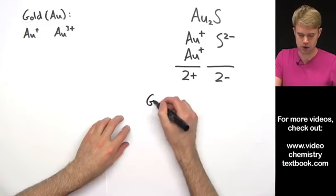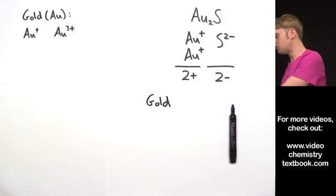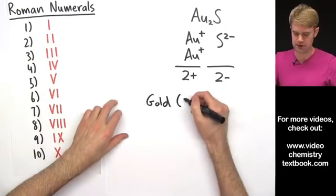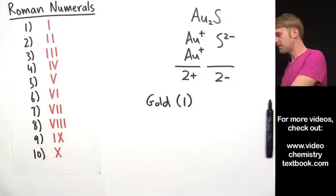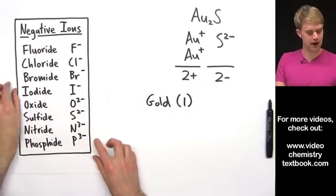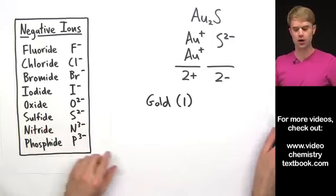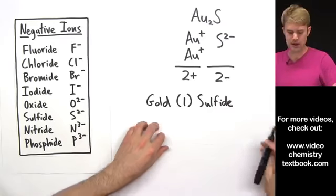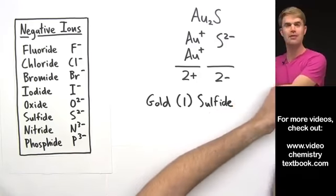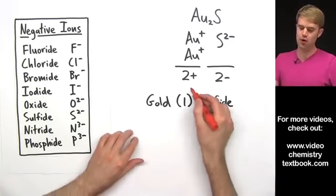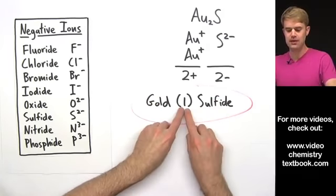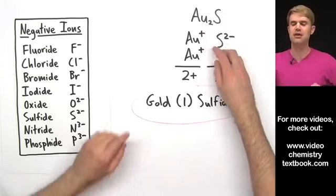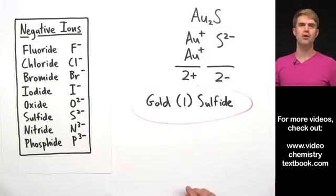So we're going to call this compound gold, then use the Roman numeral: gold(I) in parentheses. For S, when S is a negative ion — S²⁻ — we call it sulfide. As a neutral element it's called sulfur, and we add -ide to the end when it becomes a negative ion. This 1 in parentheses refers to the charge on gold; it doesn't have anything to do with the number after gold.